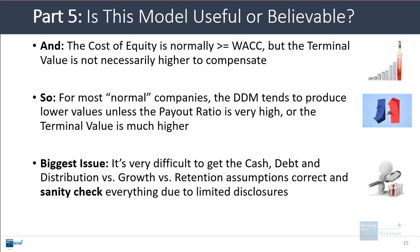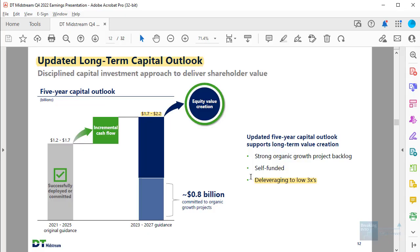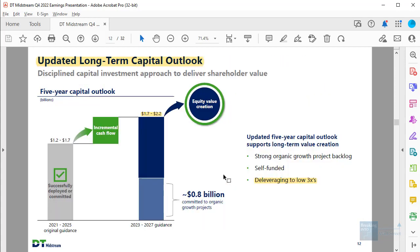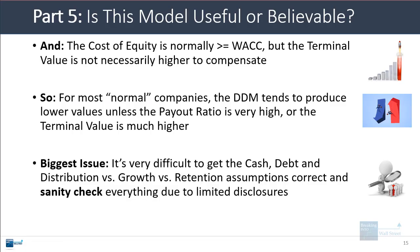The biggest issue is that it's very difficult to get the cash and debt assumptions correct, and also to get the distribution growth and retention assumptions correct. It's also quite difficult to sanity-check what you're doing. We were fortunate that DT Midstream gives a lot of information on this, but looking at five to ten other midstream companies while creating this tutorial, a lot of them had almost no information on some of these very important details.